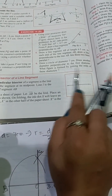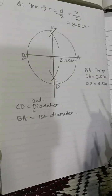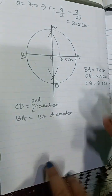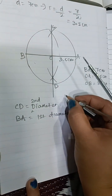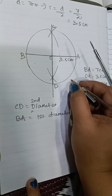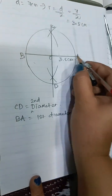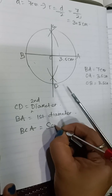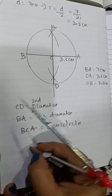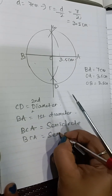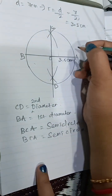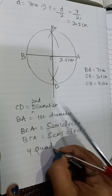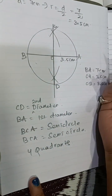What figure is formed by joining the ends of these diameters? Joining the diameters — this is AB and this is CD. These are two diameters each having length 7 cm. The figure formed is BCA, which is a semicircle, and BDA is also a semicircle. And there are four quadrants formed.